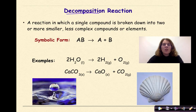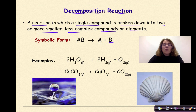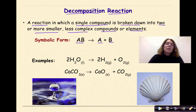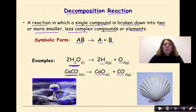Let's talk briefly about decomposition reactions. A decomposition reaction is a reaction in which a single compound is broken down into two or more smaller, less complex compounds or elements. Symbolically, this is seen as a single reactant with multiple products. In this class, you will not have to predict the products of a decomposition reaction — that's beyond the scope of this course. You do need to know how to recognize them. For example, liquid water could be broken down into hydrogen gas and oxygen gas through a process called electrolysis. Calcium carbonate can be broken down into calcium oxide and carbon dioxide when heat is added. You just need to recognize that a decomposition reaction has one reactant and more than one product.